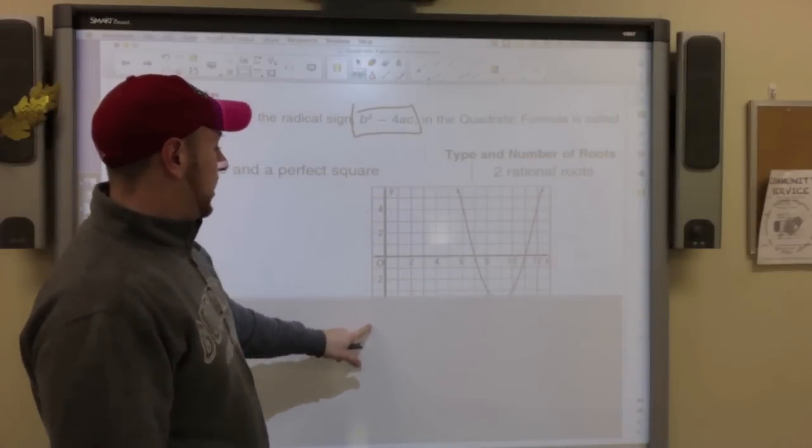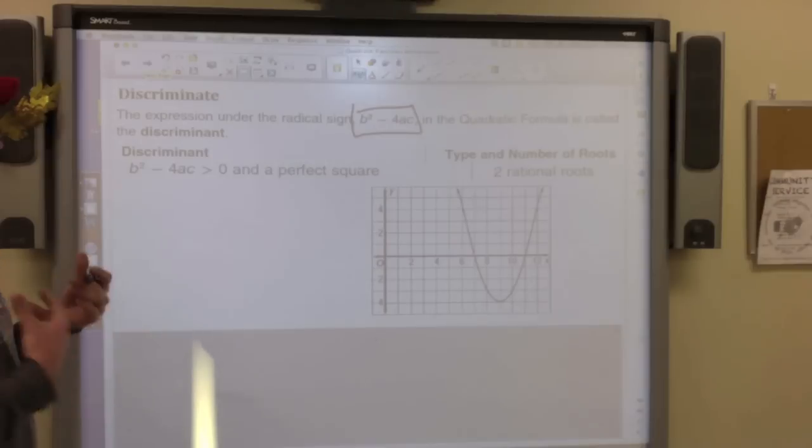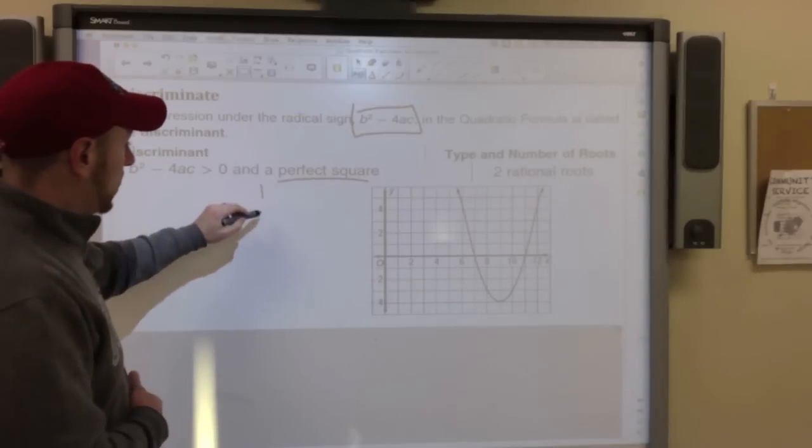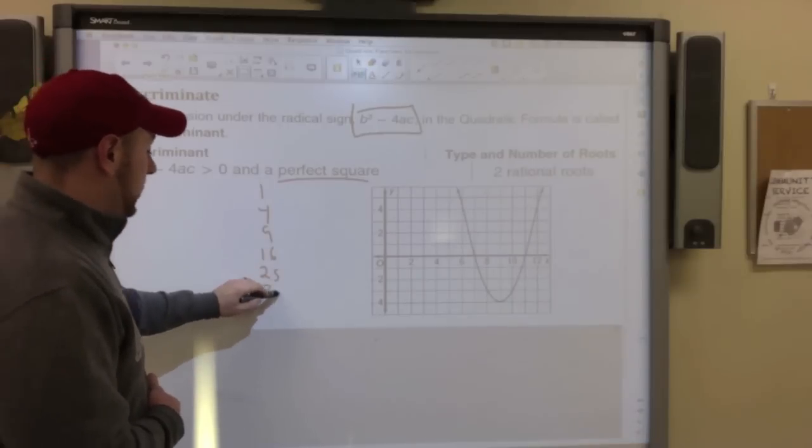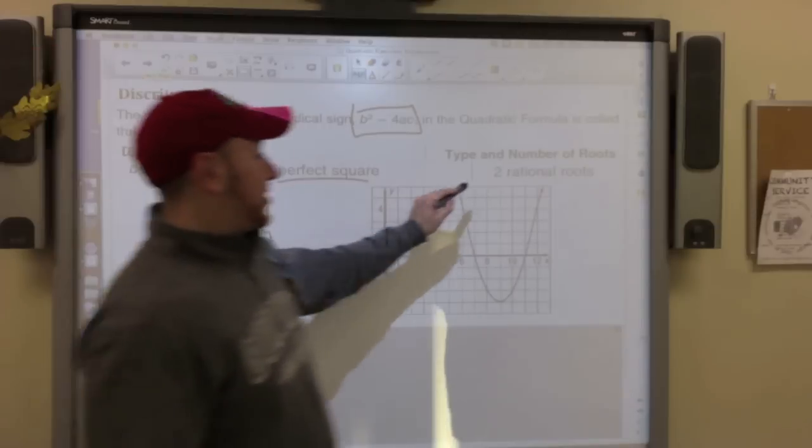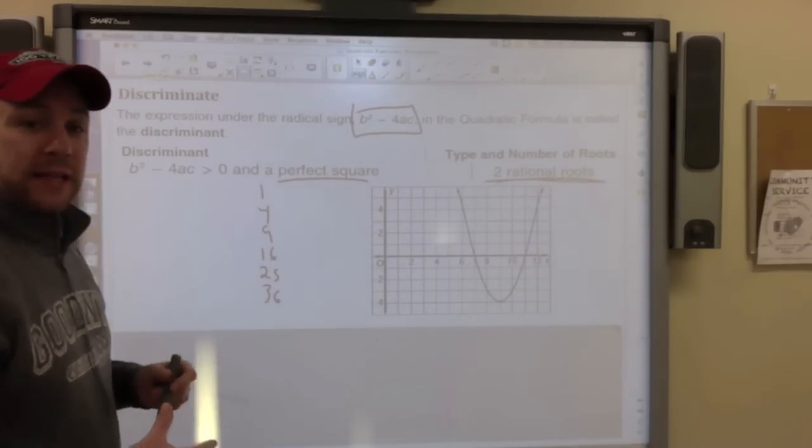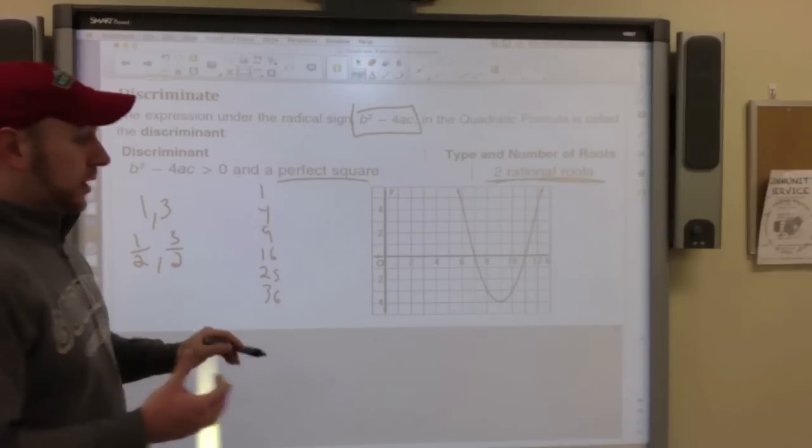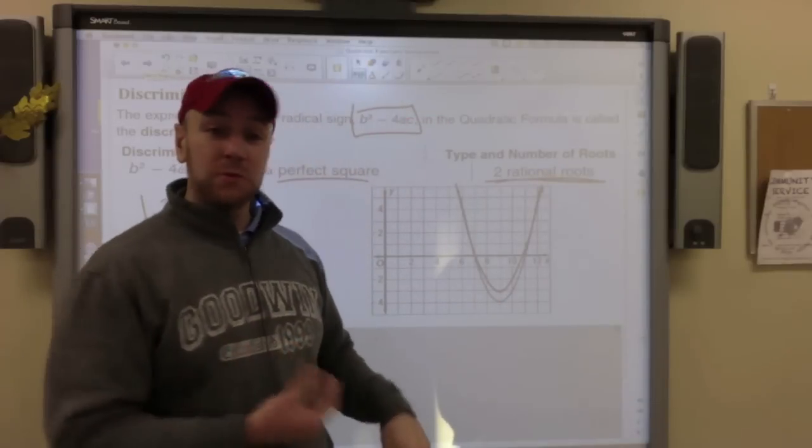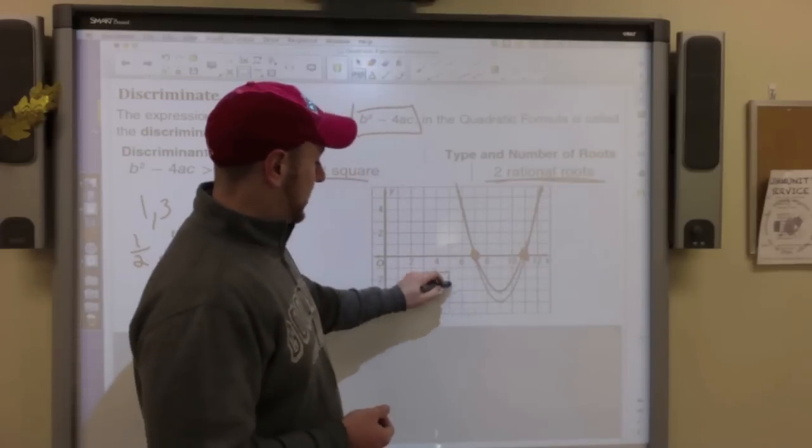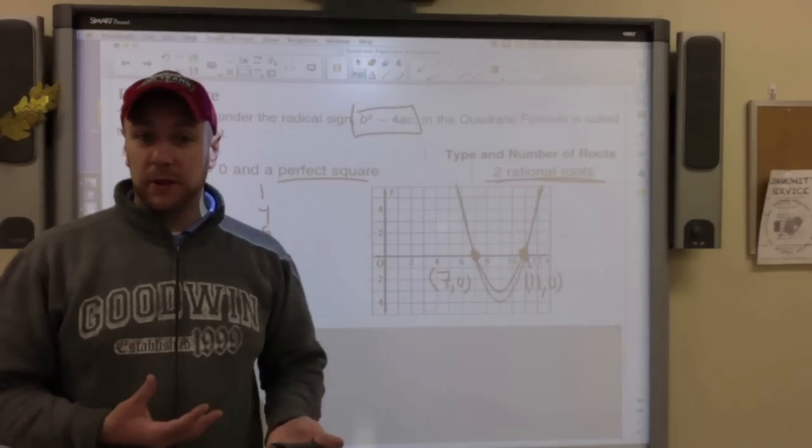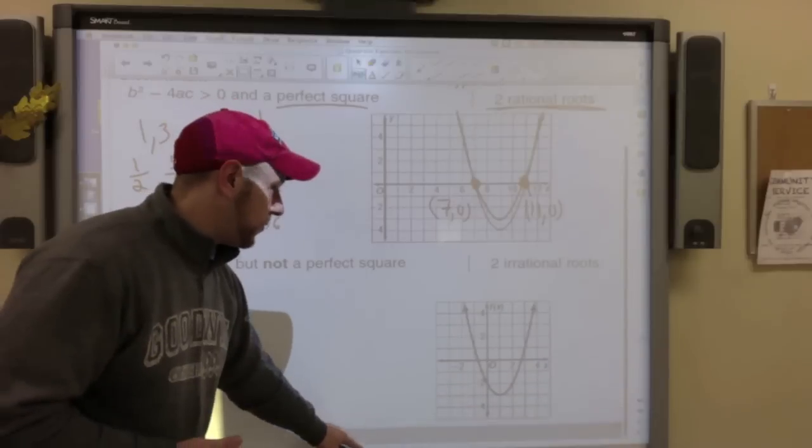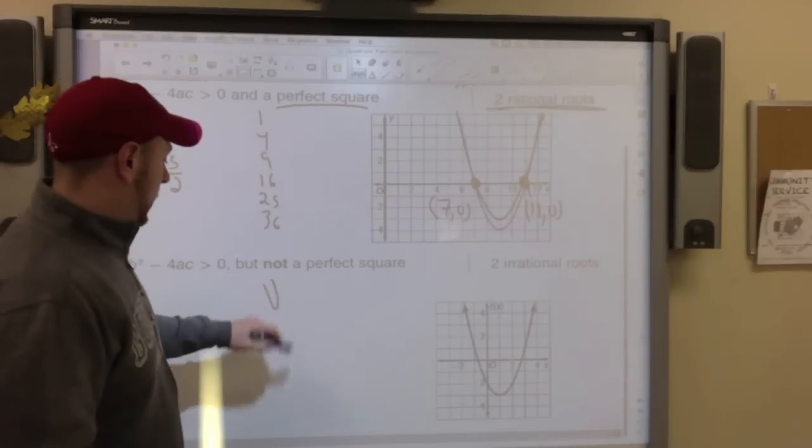So the discriminant says if b squared minus 4ac is greater than 0, means it's a positive number, and it's a perfect square. So we're talking about 1, 4, 9, 16, 25, 36, anything that I can find the square root of. It says it has two rational roots. That means those solutions could be 1 and 3. It could be 1 half and 3 halves. Where it crosses. If you look at this example right here, these have two rational roots because they cross at 7, 0 and 11, 0. Those are my roots. And that's two rational roots.